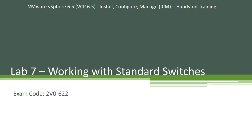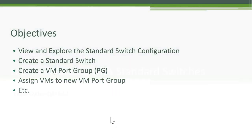Welcome back to our VCP 6.5 ICM hands-on training. This is Lab 7. In this lab we will start working with VMware's standard switch — a lot of people simply refer to them as vSwitches. We'll explore some things about the vSwitch and try to create a new vSwitch and a new port group. This is the high-level agenda we'll walk through in this lab.